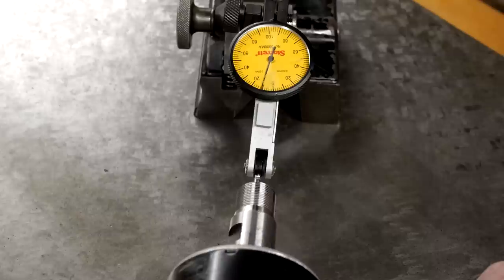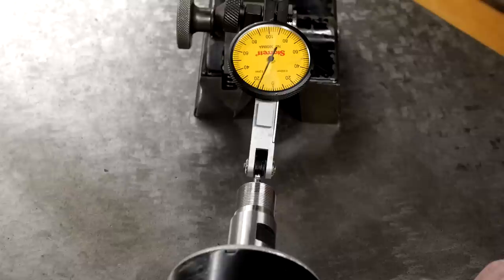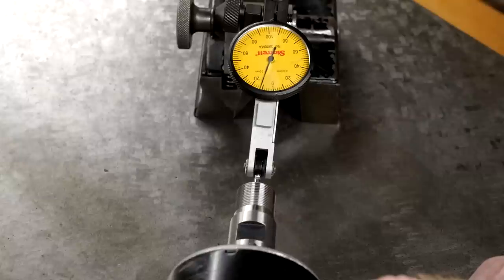The runout reading is almost exactly 6 divisions, which is 12 microns. That's just under 0.5 thou for people who prefer to think in Imperial. This is better runout than I expected, but it's worth noting that there's no load of any kind on the spindle, so it may not perform this well during use.